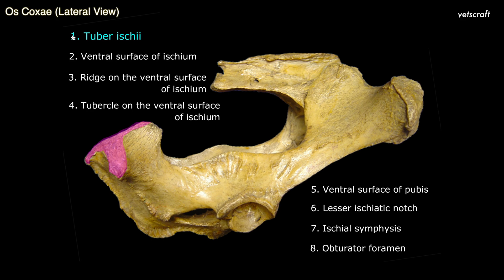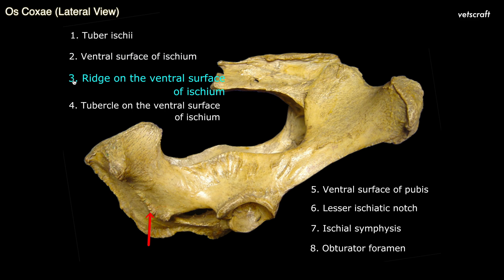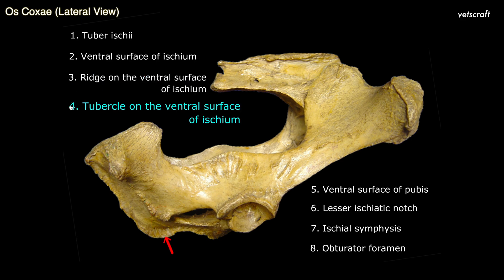Tuber ischii is formed by the posterior external angle of ischium and is a trifid process. The ventral surface of the ischium is flat. The arrow indicates a curved ridge at the middle of the ventral surface of ischium, which gives origin for the biceps femoris muscle. The curved ridge ends at a tubercle on the ventral surface of ischium, which also gives origin for the biceps femoris muscle.